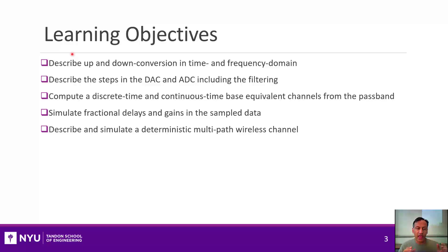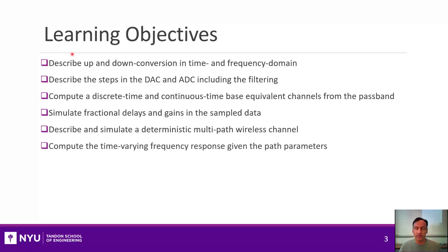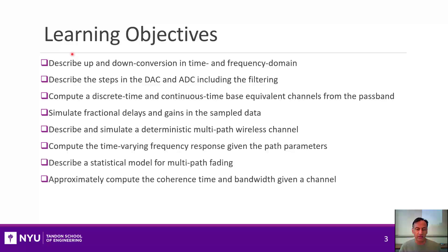Once we have that set up, we're going to look at what happens in a multipath wireless channel, and that's when we'll be able to see the effect of fading. In particular, we'll describe what we call a time-varying frequency response, and it's these time variations that cause the fluctuations in the channel that you see in real wireless systems. You'll be able to simulate and understand that.